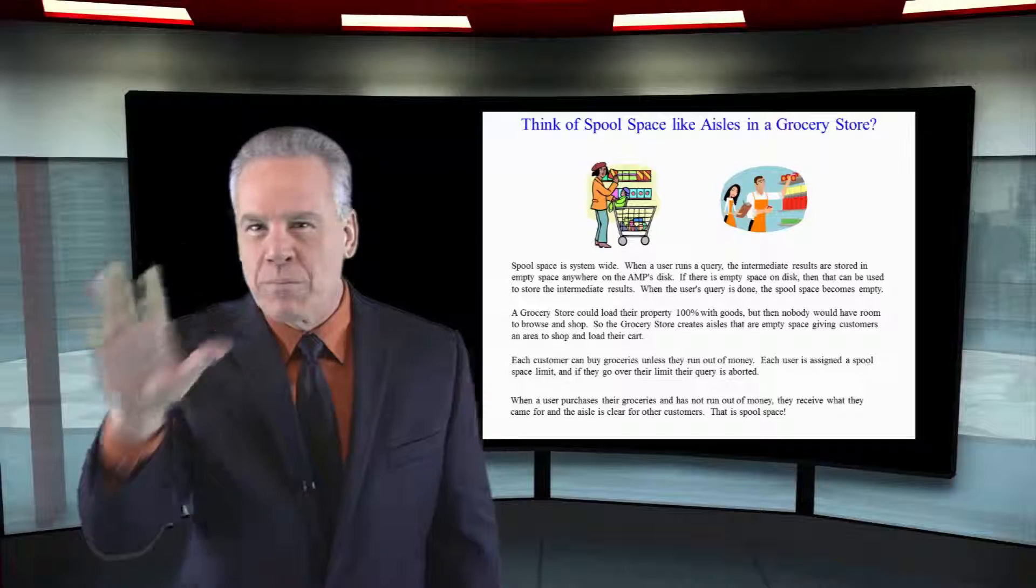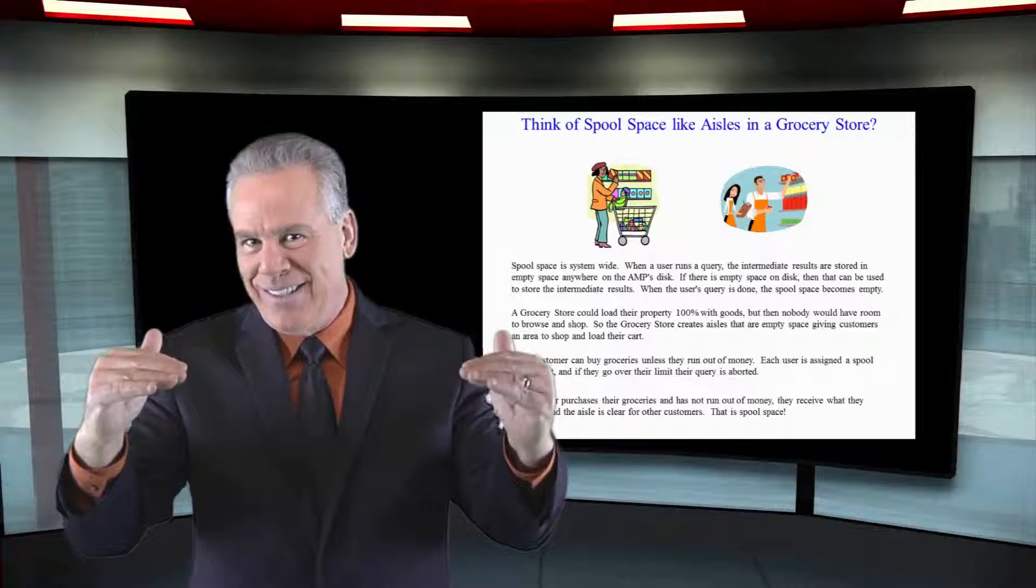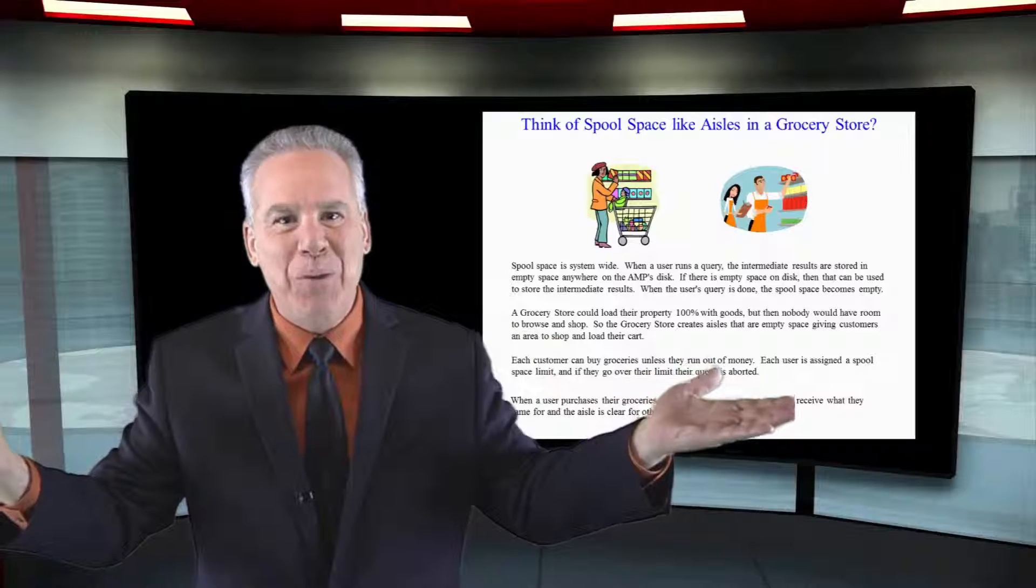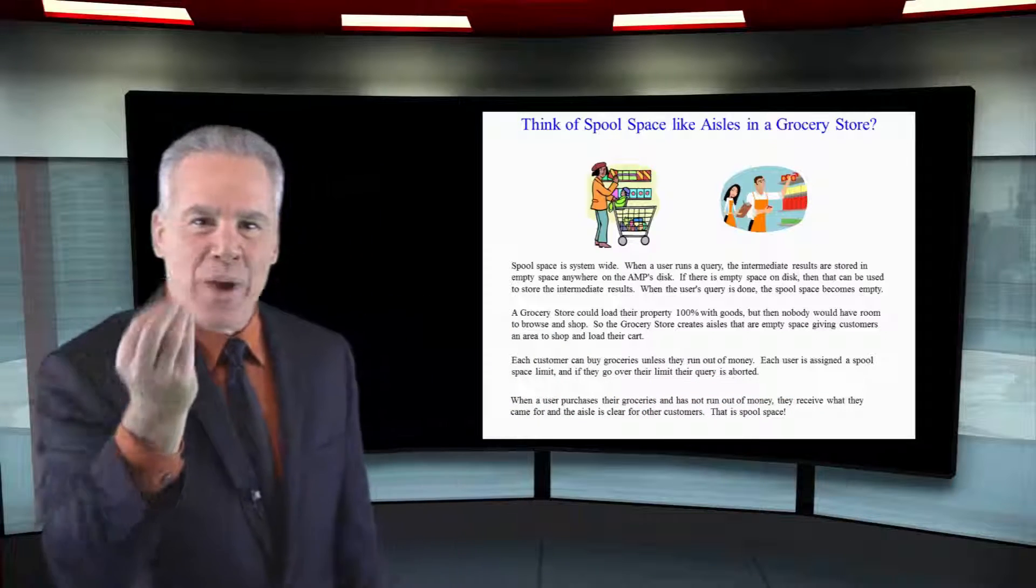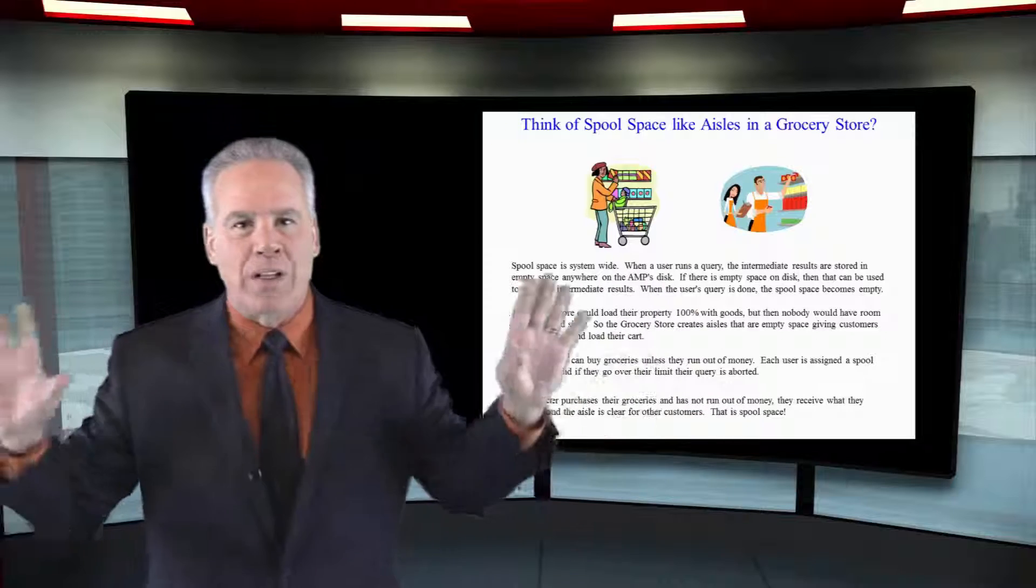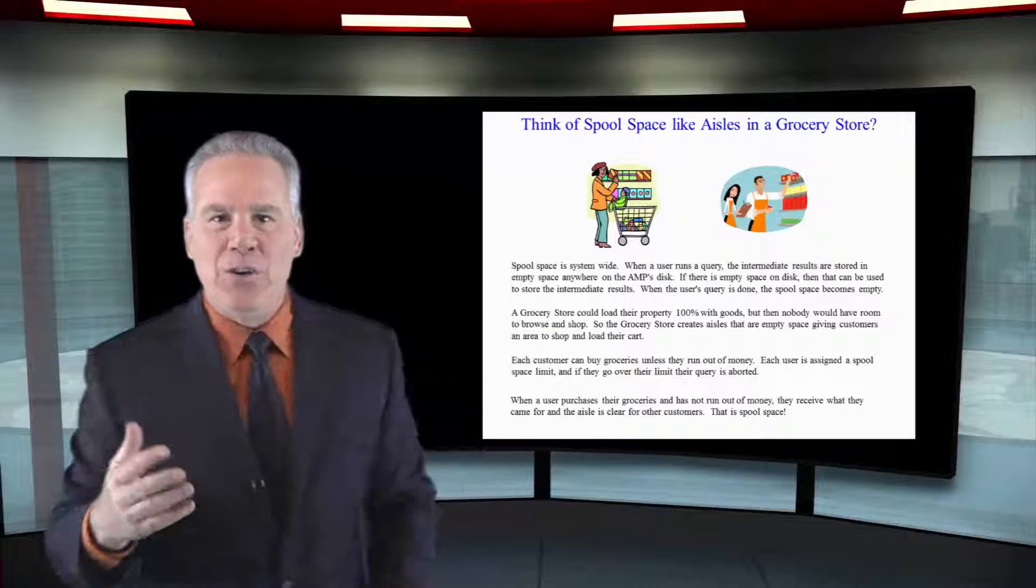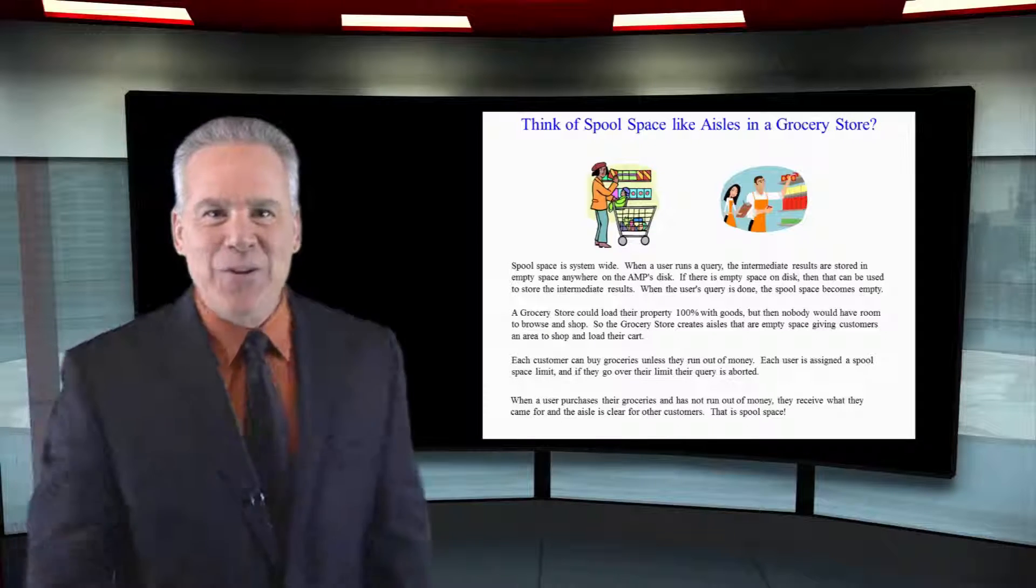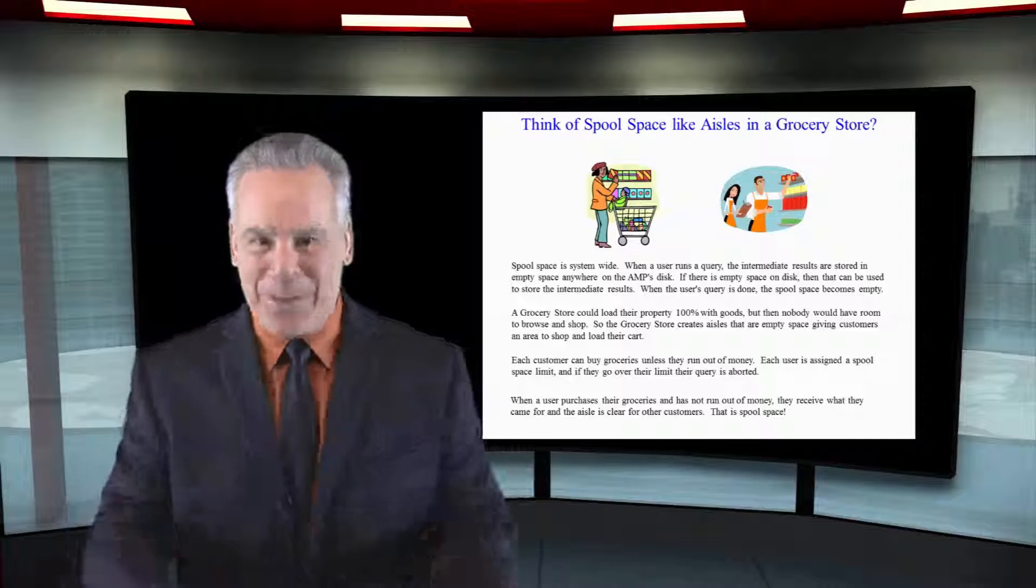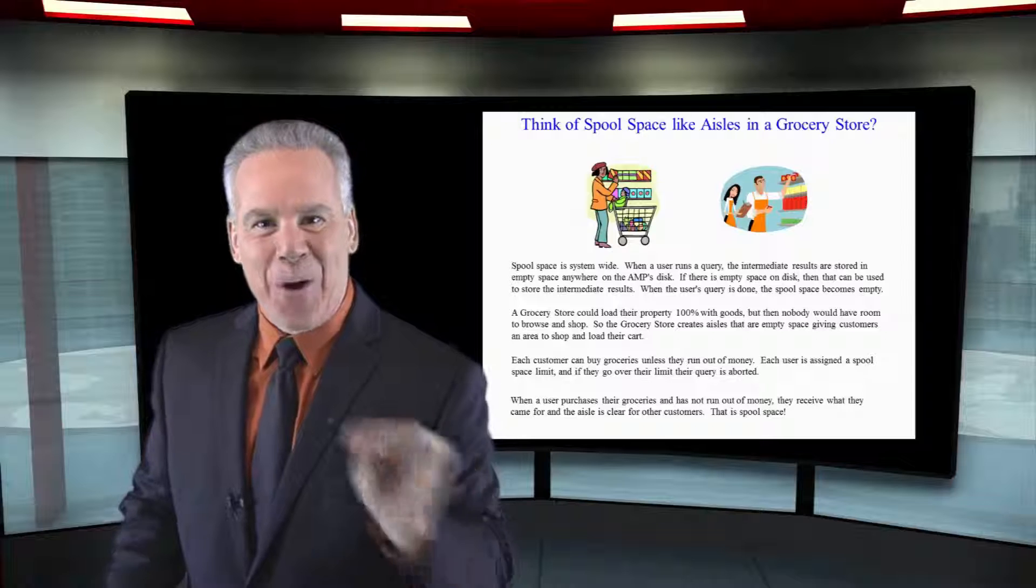It's all perm space in a Teradata system. But when you leave empty space, it's empty for spool. That's the way it would work in your hundred thousand square foot building. You'll put a lot of products in, but about 20% of that building you'll leave empty. Those are called aisles and people can take their shopping carts down there. That's the way Teradata works.